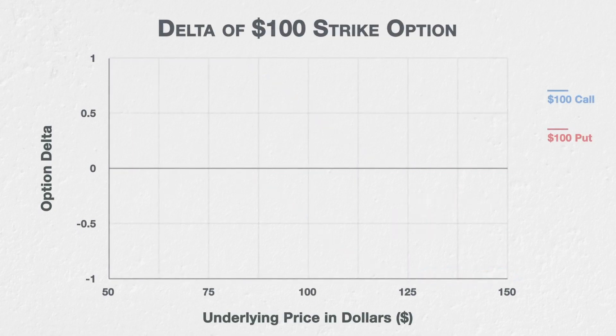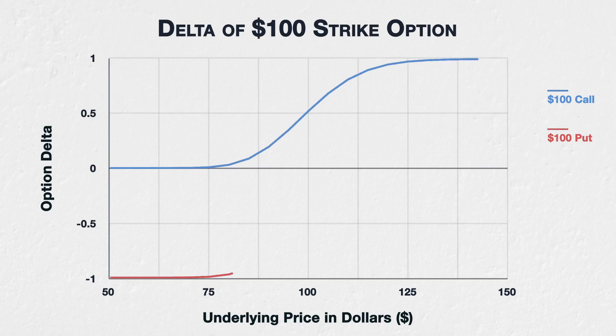Another way of viewing this is to look at the delta of one specific option based on what price the underlying asset is currently trading at. Here we are looking at the call and put options with a $100 strike price, and how their delta is affected by changes in the underlying price. Starting at the left-hand side of this chart, with an underlying price of $50, a call option with a $100 strike will have a delta of almost 0. The $100 strike call is very far out of the money, so it's almost worthless — a $1 increase to $51 will not change this much, therefore the delta is very close to 0.